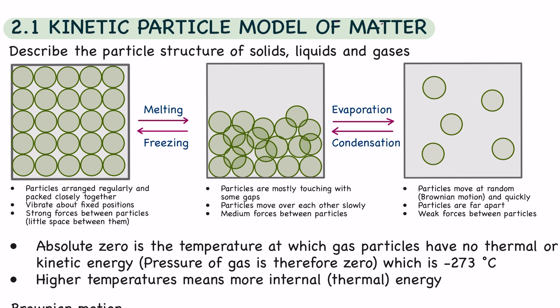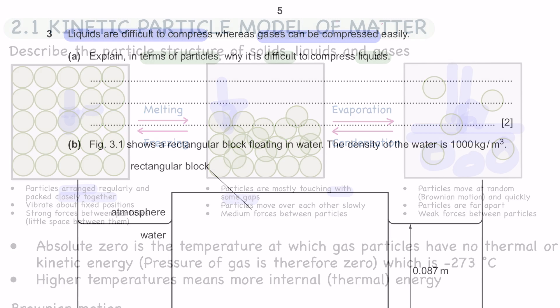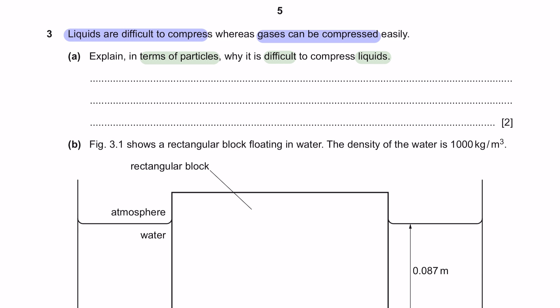To understand this, we have to first look at the particle structure of solids, liquids, and gases. In solid, the particles are arranged closely together, and there are no space in between them for them to be compressed. Whereas in liquid, even though there are some gaps, it is still difficult for them to be compressed. Whereas gases, they have a lot of space with each other, therefore, you can compress them and force them to be closer to each other. So, in terms of particle, you can say...